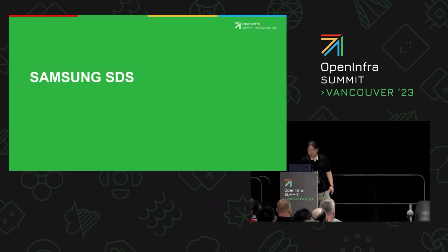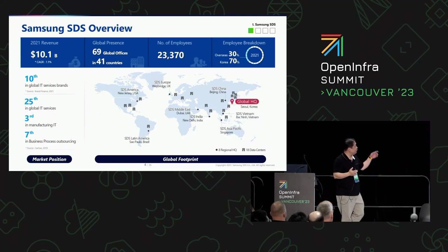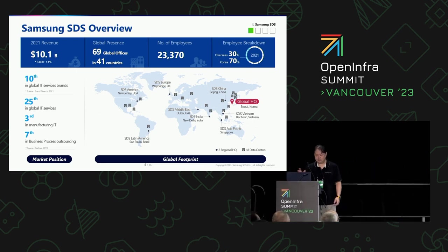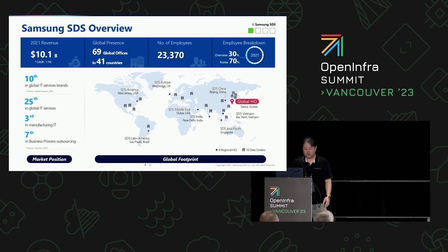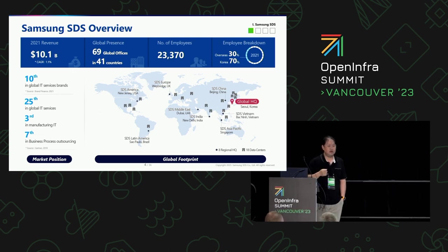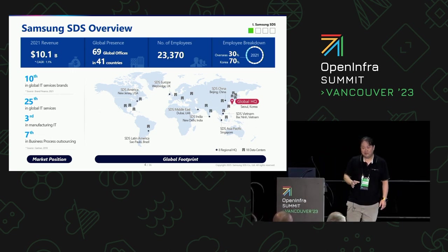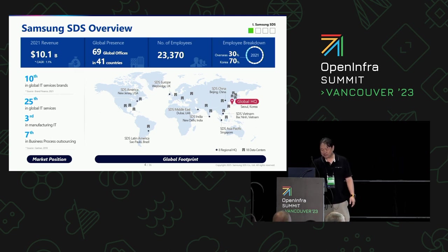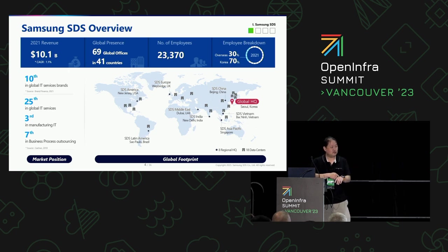Samsung SDS is a fairly large company — a $10 billion company. We've been around for about 40 years. We have 69 global offices, 23,000 employees, and most of our employees are in Korea — specifically South Korea. We're in Seoul. We're 10th in terms of brands, 25th in terms of services. The map shows the different offices that we have. I actually work in Seoul, Korea, and it's 3:20 in the morning over there right now, so I'm a little bit tired, but I think I'll manage.